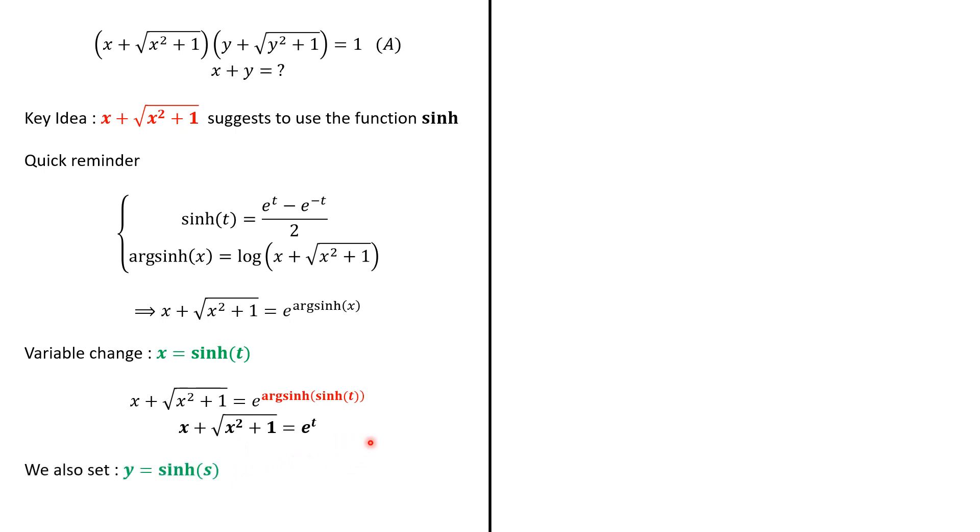If we do the same setting, y = sinh(s). So, y + √(y² + 1) = e^s. Now, we use this. So, this multiplication is going to be e^t multiplied by e^s, which is e^(t+s). And we know that this quantity is 1. So, e^(t+s) = 1, so that t + s = 0, and t = -s.